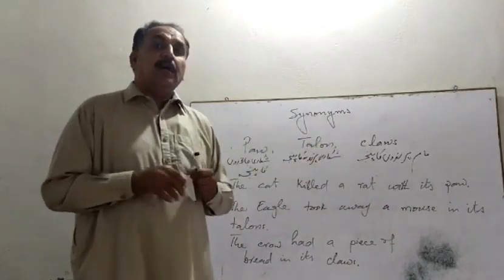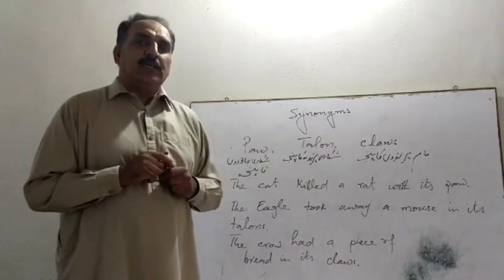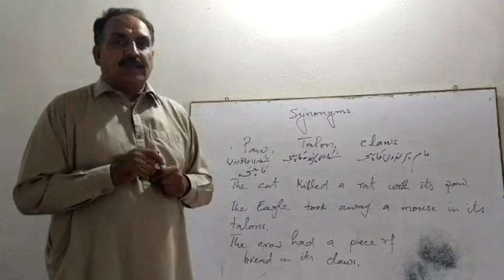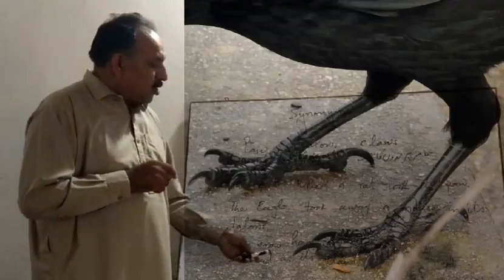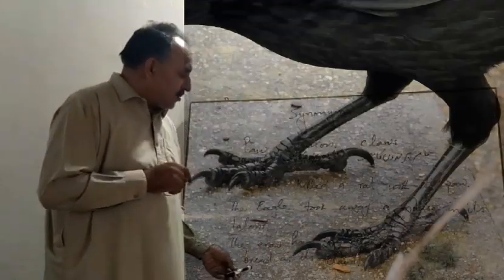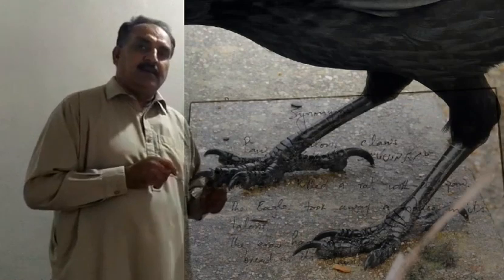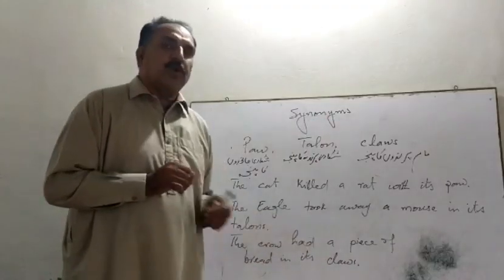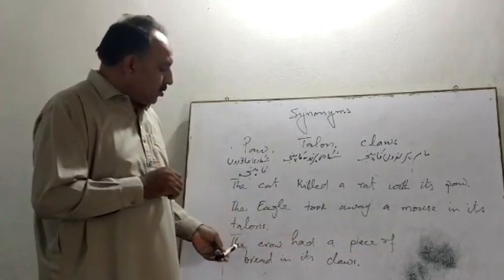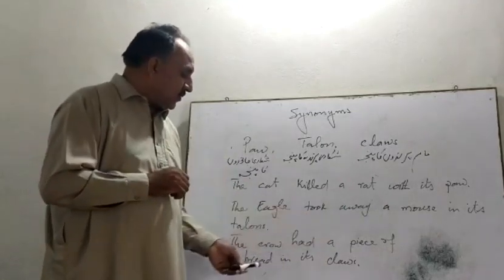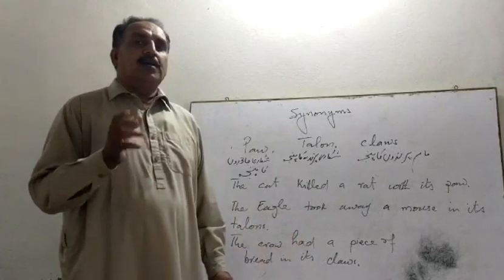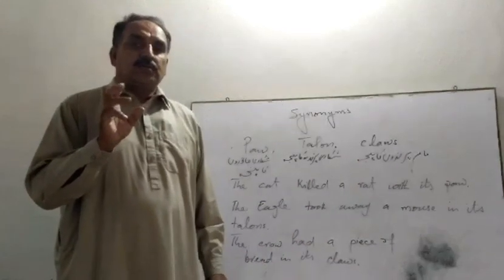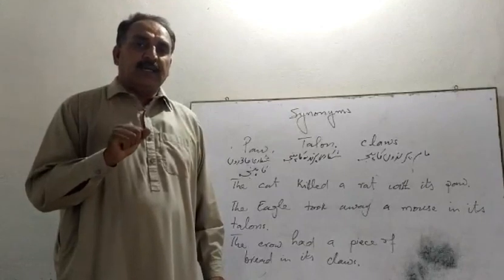Claws — عام پرندے جو ہوتے ہیں ان کے پنجوں کو claws بولتے ہیں۔ For example: The crow had a piece of bread in its claws. یعنی کوئے کے پنجے میں روٹی کا ٹکڑا تھا۔